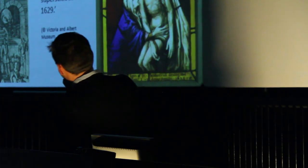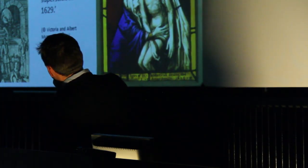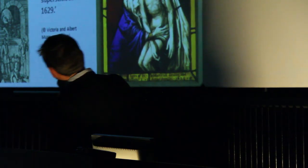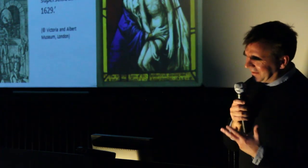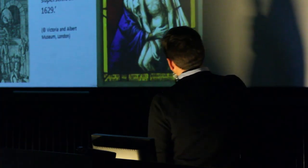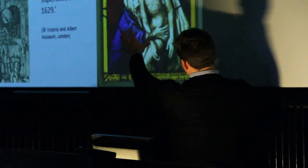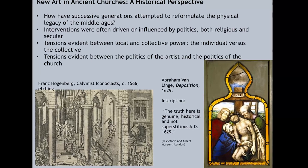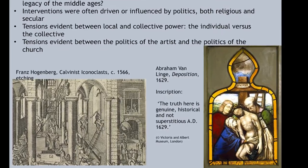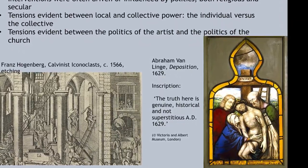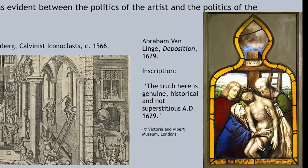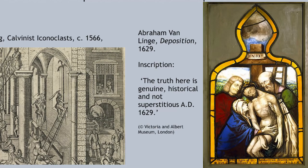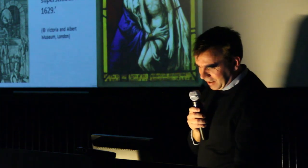I've got a couple of images here. Sir Moan Calvinist iconoclasts smashing up stained glass in the 1560s. And I love this stained glass panel — you'll hear quite a lot about stained glass today, because I've worked a fair bit on it. This is a Flemish glass painter, Abraham Van Linger. This panel comes with its own health warning. It was created during the Laudian High Church Revival within the Anglican Church, and the inscription on the bottom says 'the truth here is genuine, historical, and not superstitious.' It's basically saying this story's in the Bible, so don't smash me. So this is a work of art that's actually saying, I'm all right.